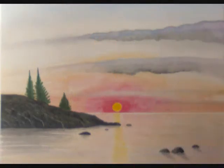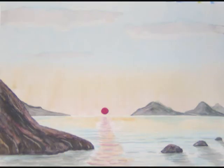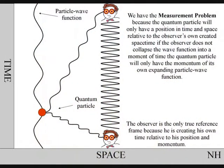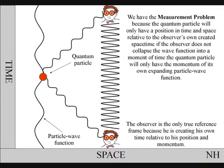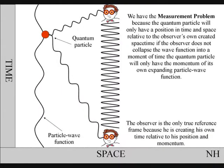In quantum atom theory, this process also creates the time continuum, or arrow of time. Any object that comes in contact with the particle wave function will collapse it, but because the observer can choose when and where to collapse the wave function, we have free will to create our own future.